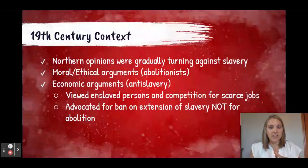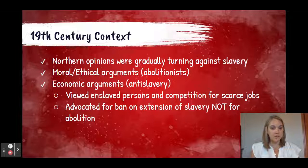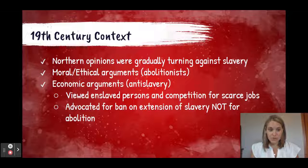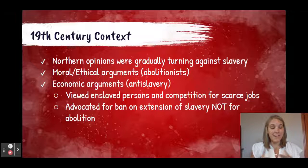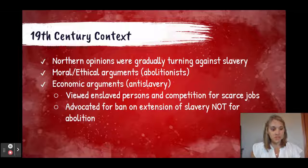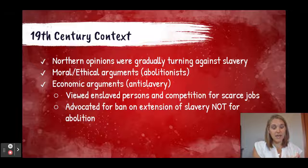To put this into context, we're talking about the antebellum years, especially the 1840s and early 1850s. Some Northern opinions were gradually turning against slavery, but abolitionists — those who were morally and ethically opposed to the system of slavery as a whole — were still in a minority. Economic arguments, more of an anti-slavery argument, were more prominent. They viewed the system of slavery as creating competition between poor white laborers and enslaved Africans.